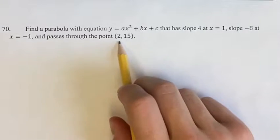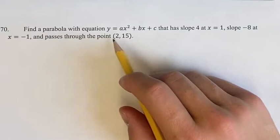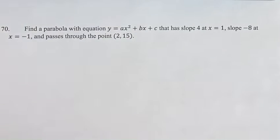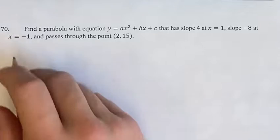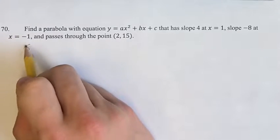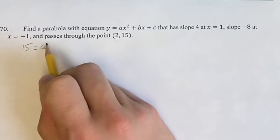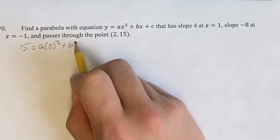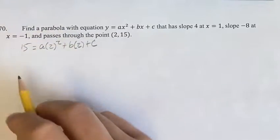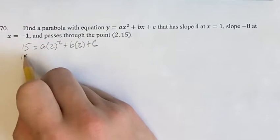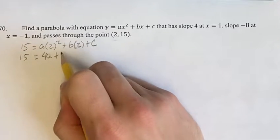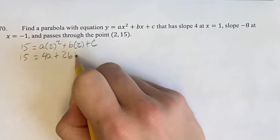Firstly, dealing with the fact that it passes through the point (2, 15): we know we can plug in 15 for y and 2 for x, and the equation will hold true. So we get 15 is equal to a times 2 squared plus b times 2 plus c. Simplifying, we get 15 equals 4a plus 2b plus c.